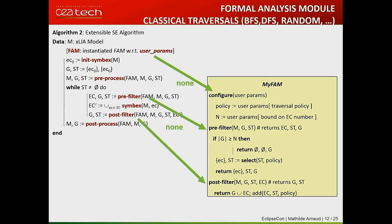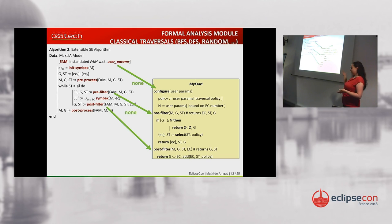You can configure a set of user parameters. Before execution, there is a pre-process step; afterwards, a post-process. At each step of symbolic execution, there is a filtering mechanism. For example, the pre-filter helps select execution contexts to apply the chosen policy: if you chose BFS, the selection will be everything; if DFS, it will be the first one built. The post-filter does nothing in this case.